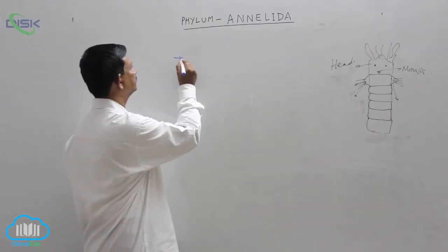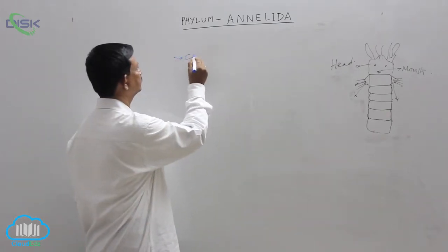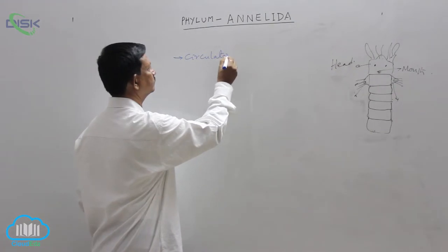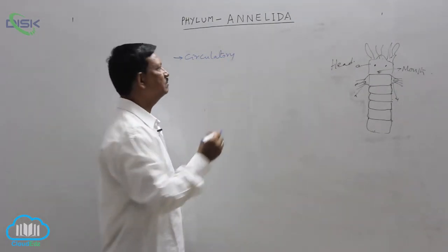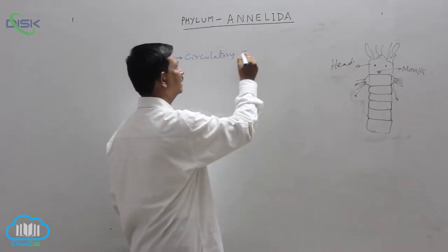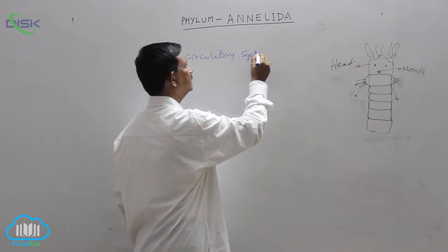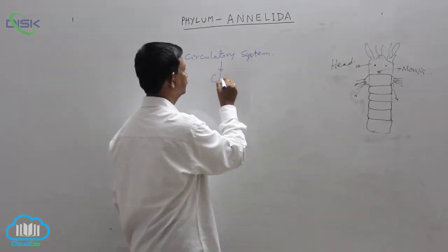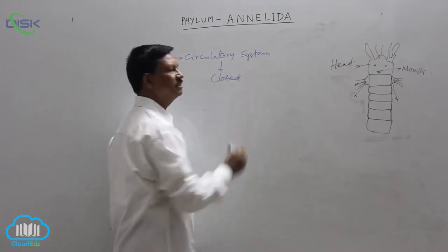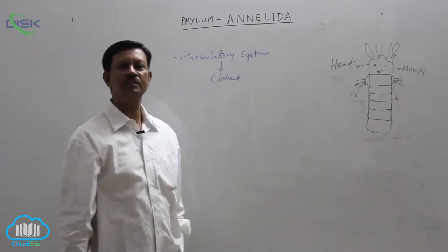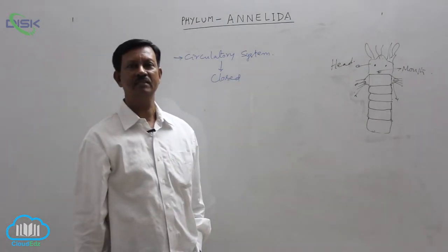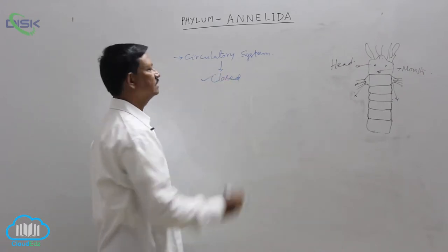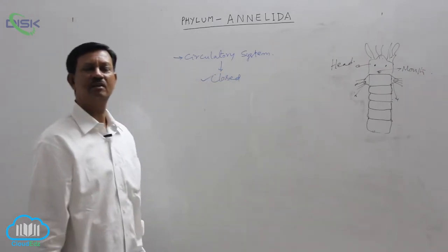Circulatory system. A circulatory system is first time developed in this phylum. It is a closed circulatory system. Closed means blood flows inside the blood vessels; hence it is known as the closed blood vascular system. It is a well-developed character.